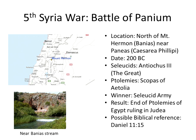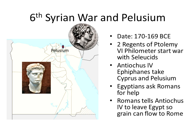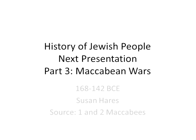Panion was near a stream in the Mount Hermon area, north toward where Israel today meets Lebanon. The sixth Syrian War is a case where the young Ptolemy, six years old, is too young to start his own war — maybe six to eight years old. The two regents start the war. Antiochus IV Epiphanes takes over Cyprus and Pelusium and is marching on Egypt. The Egyptians ask the Romans for help, and the Romans tell Antiochus to leave Egypt so that grain can flow.